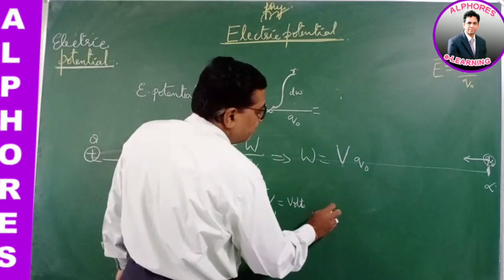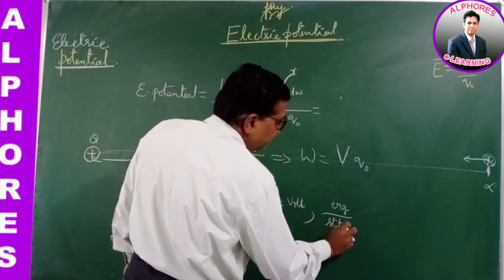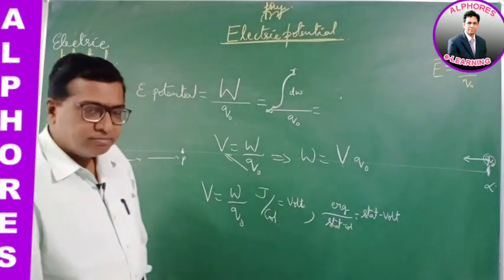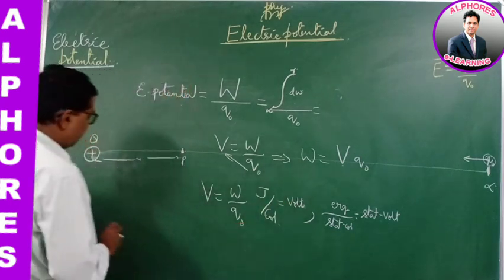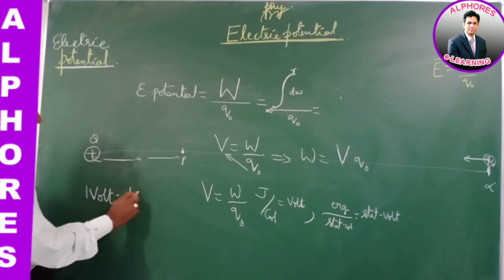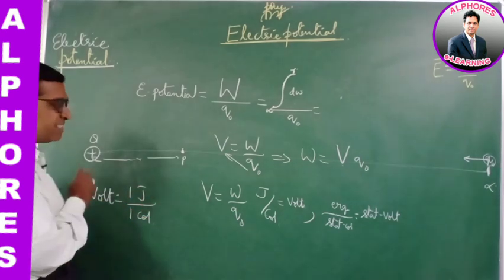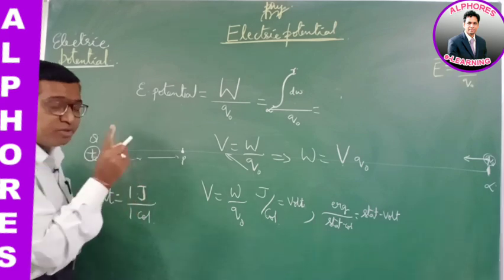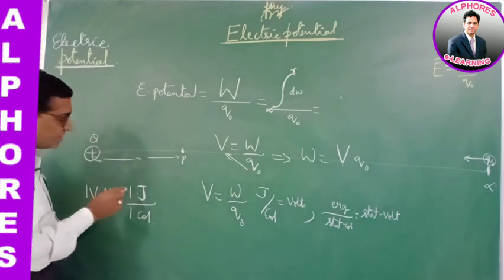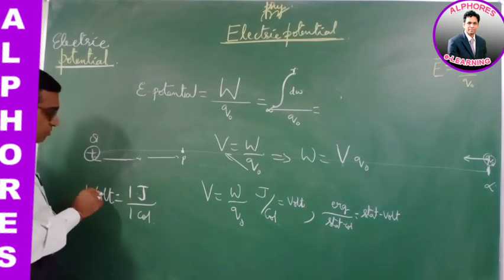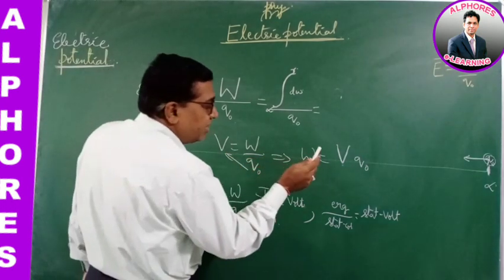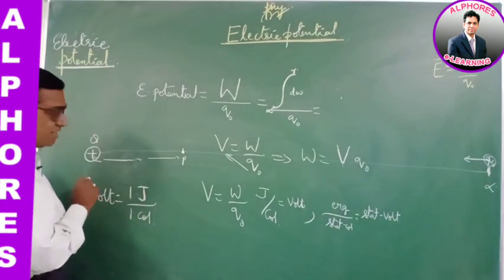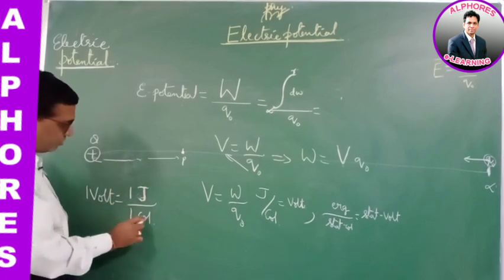Now the units: it is joules per coulomb. SI unit is joule per coulomb, which is called the volt. In CGS system, the unit is erg per stat coulomb, which is called the stat volt. Joule per coulomb equals volt. Define 1 volt: 1 volt is 1 joule per 1 coulomb — when 1 joule of work is done in moving a unit positive test charge from infinity to a point in the field, the potential at that point is 1 volt.